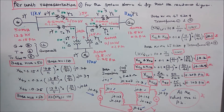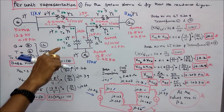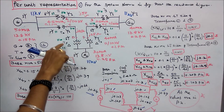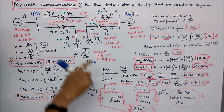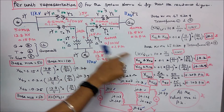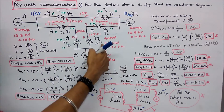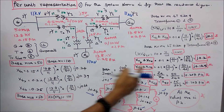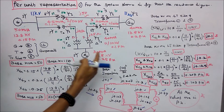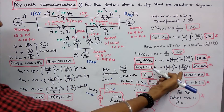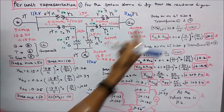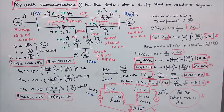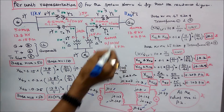For transformers T5 and T6: per unit = 0.1 × (11/11)² × (50/40) = j0.125. Both T5 and T6 are j0.125 per unit.